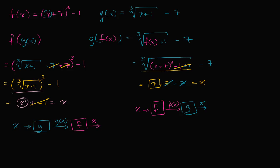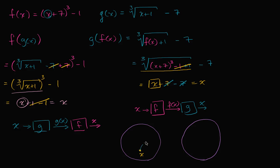Another way to think about it: if you view these as the set of all possible inputs into either of these composite functions, and these are the outputs — the function g maps from x to some value g of x. And then if you apply f to that value, g of x, you get all the way back to x. So that is f of g of x.